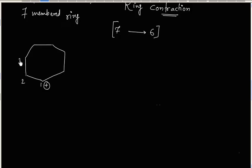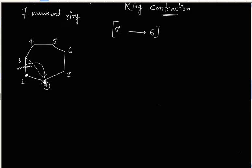Numbering the ring: 1, 2, 3, 4, 5, 6, 7. For a 1,2-alkyl shift, carbon number 2 is adjacent to carbon number 1 (the carbocation). We shift the alkyl group from carbon number 2 to carbon number 1, breaking this bond so that carbon number 3 and carbon number 1 become connected.